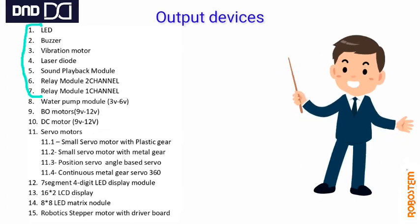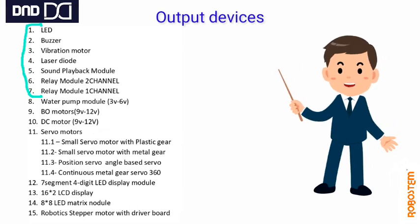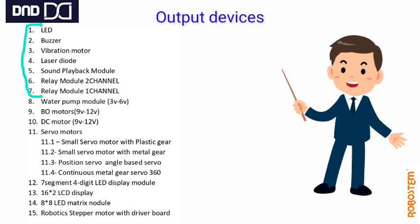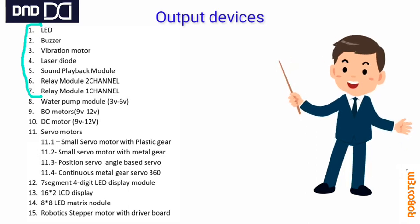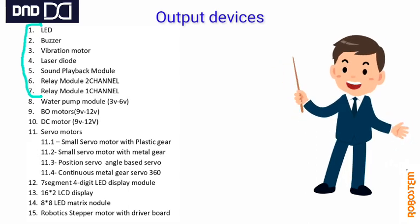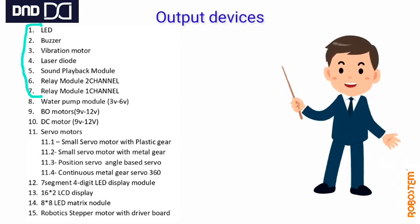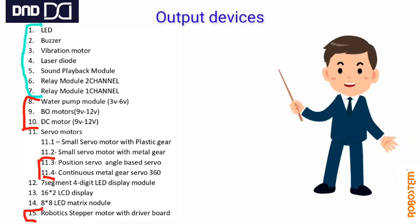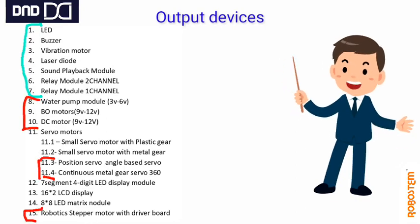The first set of output devices, from 1 to 7, are very easy to use. The connections are very simple and the programming is very simple. Most of them are frequently used.